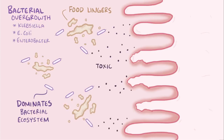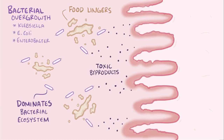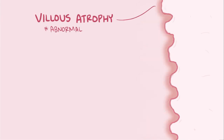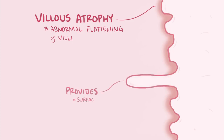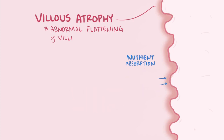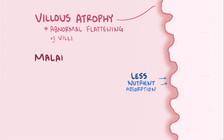These bacteria release toxic byproducts as they ferment the food that lingers in the gut, and these toxins can damage the intestinal lining, leading to more inflammation. Over time, all this chronic inflammation leads to villus atrophy, which is flattening of the villi that line the small intestine. Villi are important because they provide surface area and digestive enzymes necessary for nutrient absorption. Flattening of the villi reduces this surface area, which means less nutrients and water can be absorbed across the intestinal wall, leading to malabsorption.